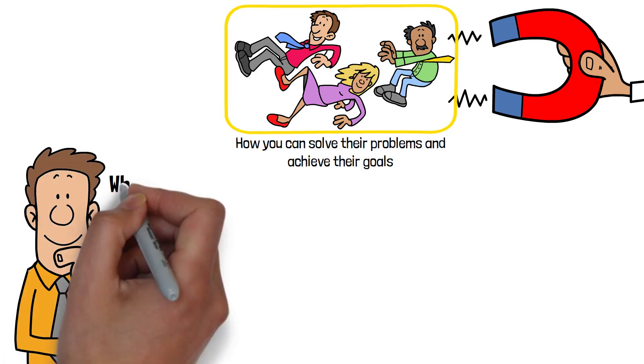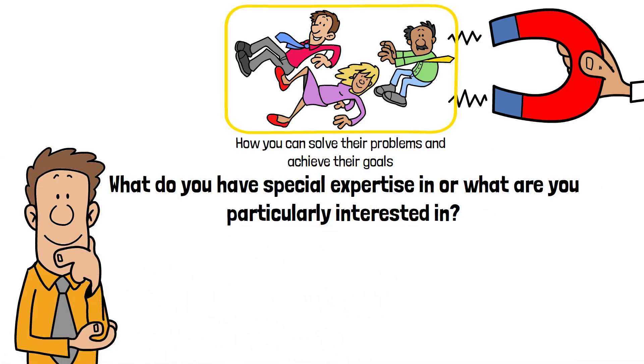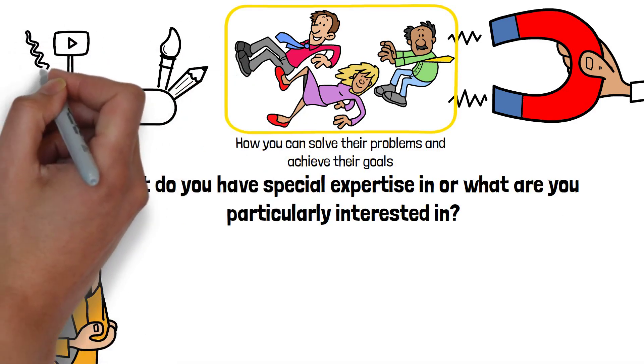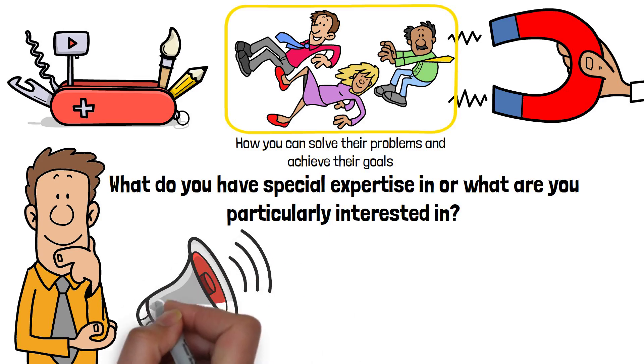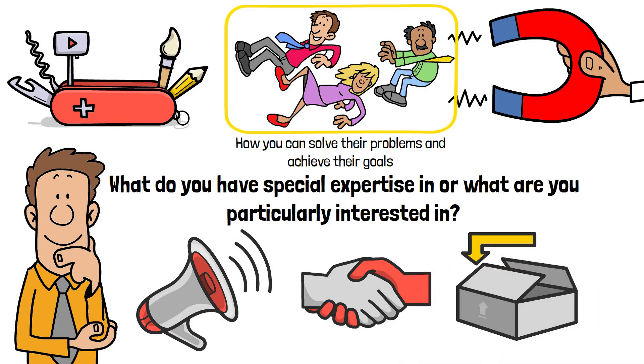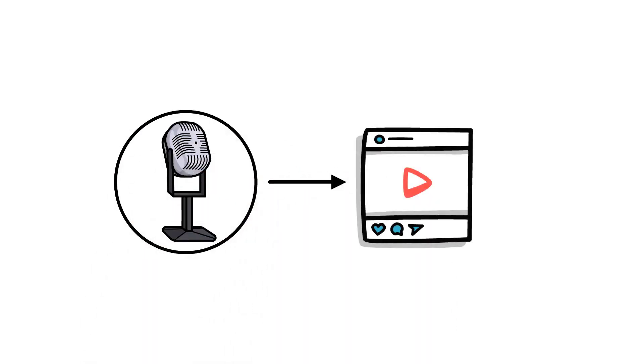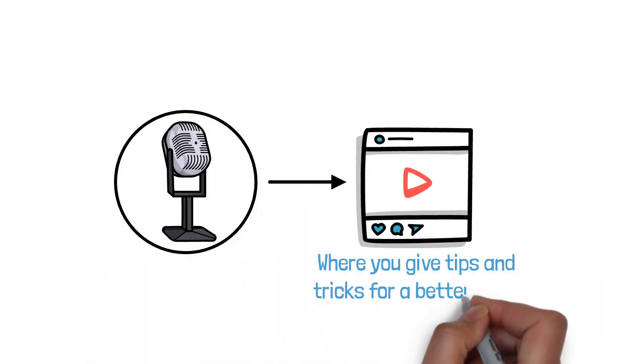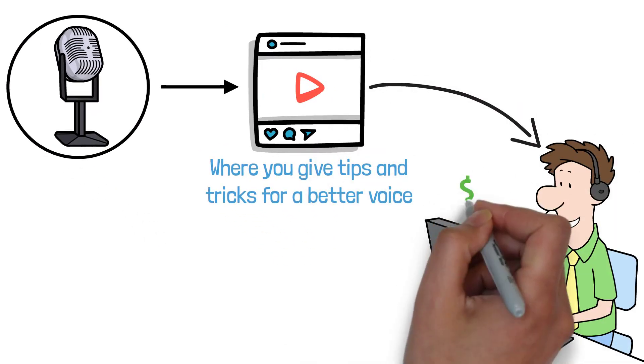So think about, what do you have special expertise in, or what are you particularly interested in? So once you have your topic, your niche, you're surely wondering how you can make money from it, right? There are several ways to do that. Affiliate marketing, brand deals, own products or services that you then offer to your target audience. For example, if you have a special expertise in voice training, you could build an Instagram page where you give tips and tricks for a better voice. On this Instagram page, you then offer voice coaching for, for example, $250.